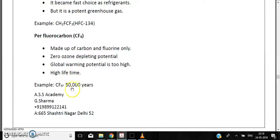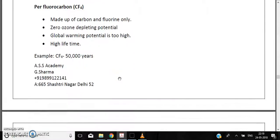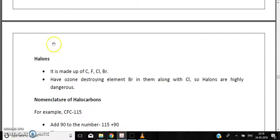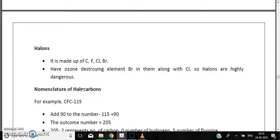If we see the CFC, the chlorofluorocarbon is 50,000 years. Now coming to the other category, which is called halons. These are made up of carbon, fluorine, chlorine, and bromine. They have ozone-destroying elements called bromine along with chlorine, so halons are highly dangerous because they are very reactive.